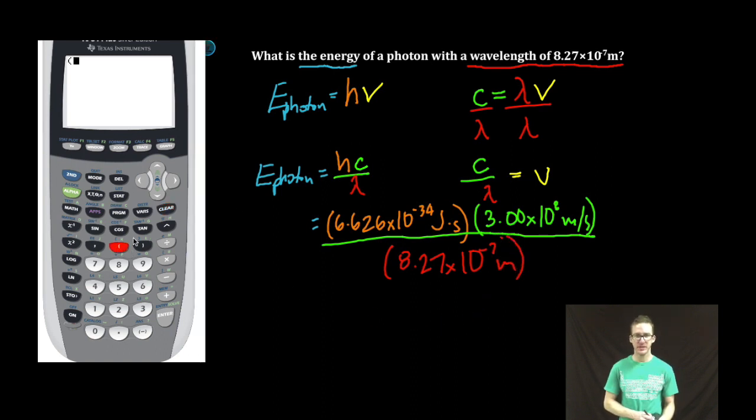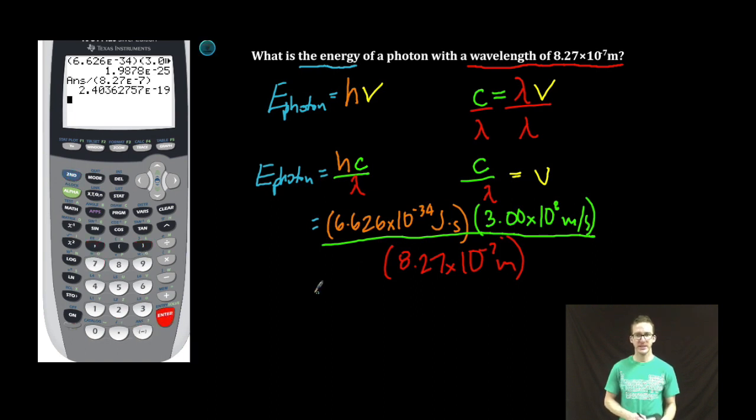Calculator time. Enter 6.626 second E negative 34, close parentheses, times 3.00 second E, close parentheses, enter. Divided by 8.27 second E negative 7, close parentheses, enter. Three significant figures.